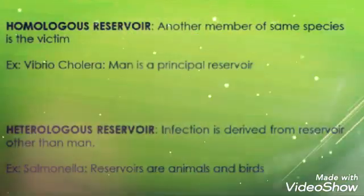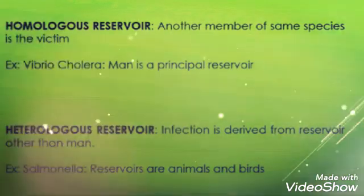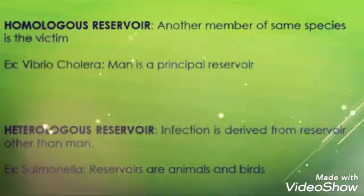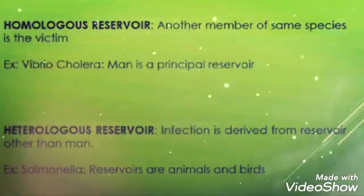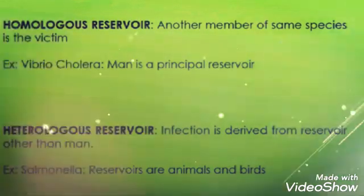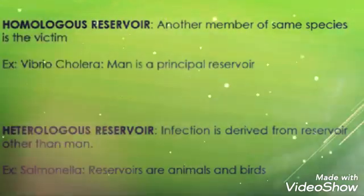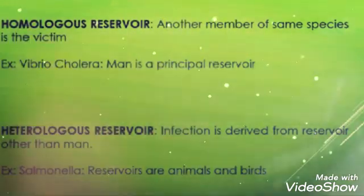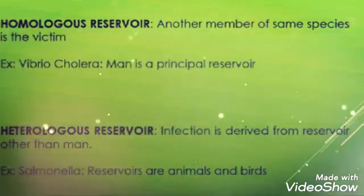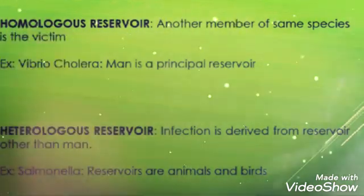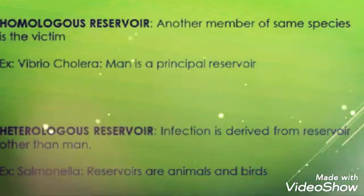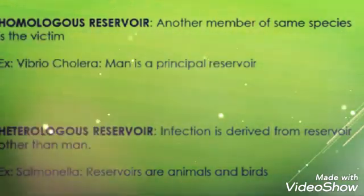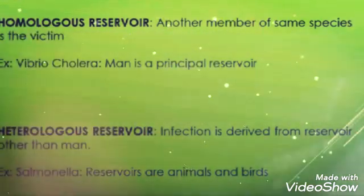Next we will see homologous reservoir and heterologous reservoir. Homo means same and hetero means different. In a homologous reservoir, viruses and pathogens can only transfer from one thing to another if they are from the same element — for example, a pathogen growing on plastic can only transfer to another plastic, and if it is on a person it can only transfer from one person to another. In a heterologous reservoir, they can transfer to anything — objects, animals, or human beings.